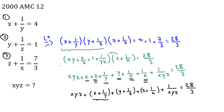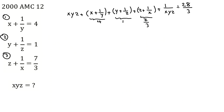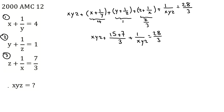Substituting the known values: x + 1/y equals 4 by the first equation; y + 1/z equals 1 by the second equation; z + 1/x equals 7/3 by the third equation. Using a common denominator of 3, we get 4 plus 1 plus 7/3 — that is 15/3 plus 7/3 equals 22/3. So the equation becomes xyz plus 22/3 plus 1/(xyz) equals 28/3.